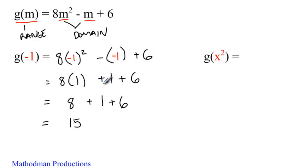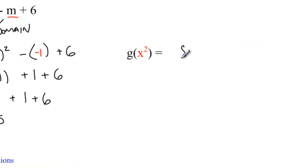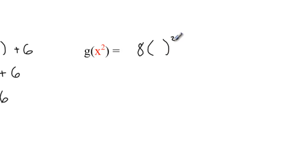Same thing for the second example, g of x squared. Start off by rewriting your whole equation, and instead of your m's, replace them with parentheses. That way, all you have to do is put in what the function tells you to, x squared. After you plug in your domain, all you have to do is simplify. 8x squared to the power of 2 is 8x to the 4th. A negative x squared is just a negative x squared plus 6. I can't simplify any further, so I'm just going to leave my answer as this.